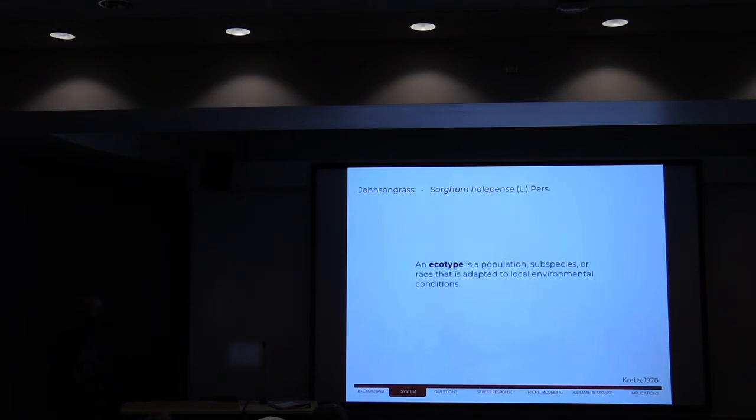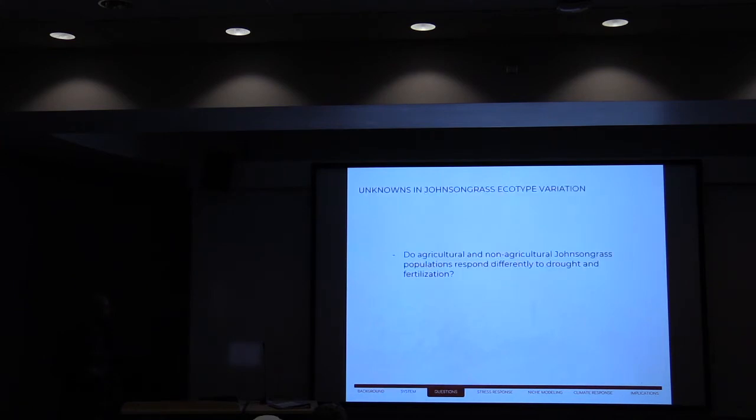On the previous slide, we were starting already to use the word ecotype, and I just wanted to define it. An ecotype is a population subspecies or race that is adapted to local environmental conditions. On one hand, that sounds like every species ever. But here, the specific part is that it's adapted to an ecosystem, which might mean a certain type of management regime or just community composition. So it's related to ecosystem.